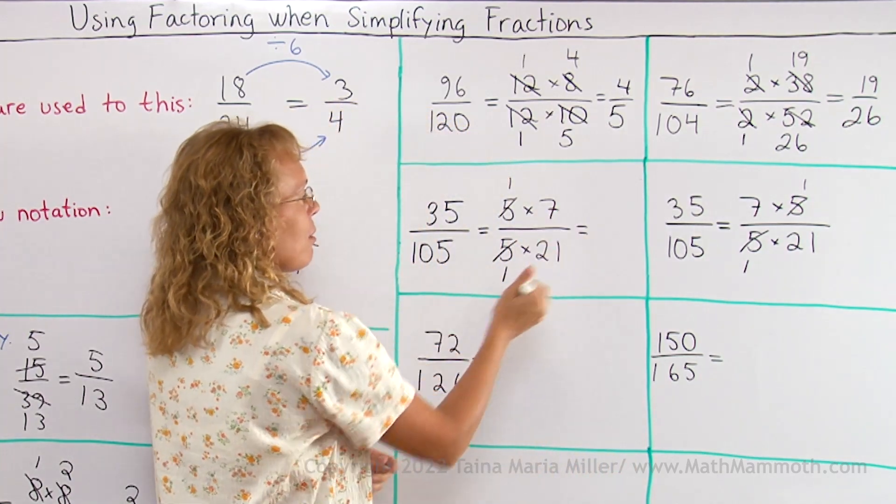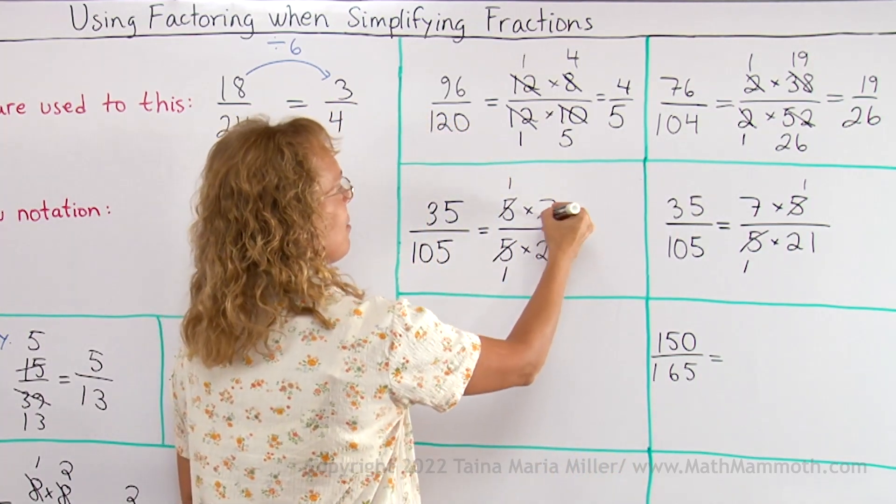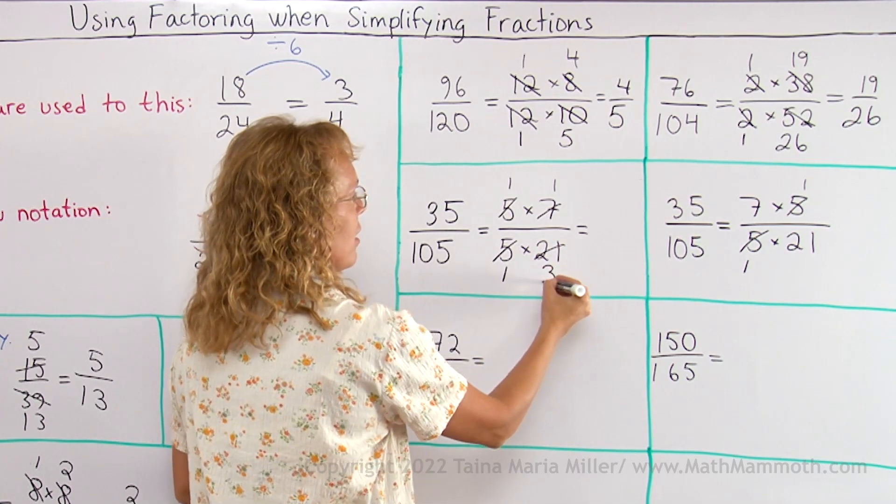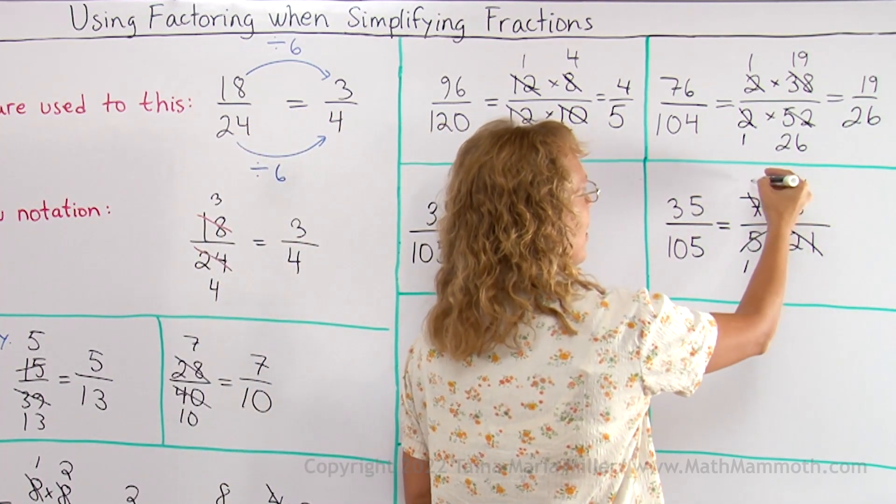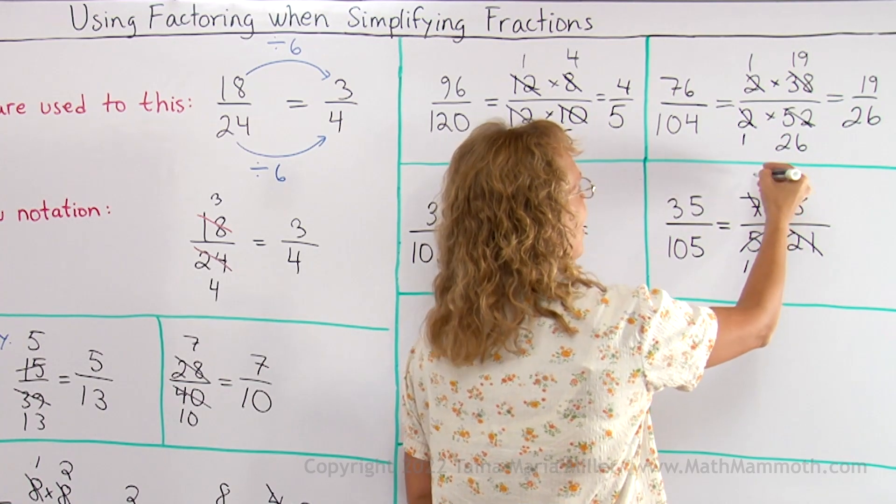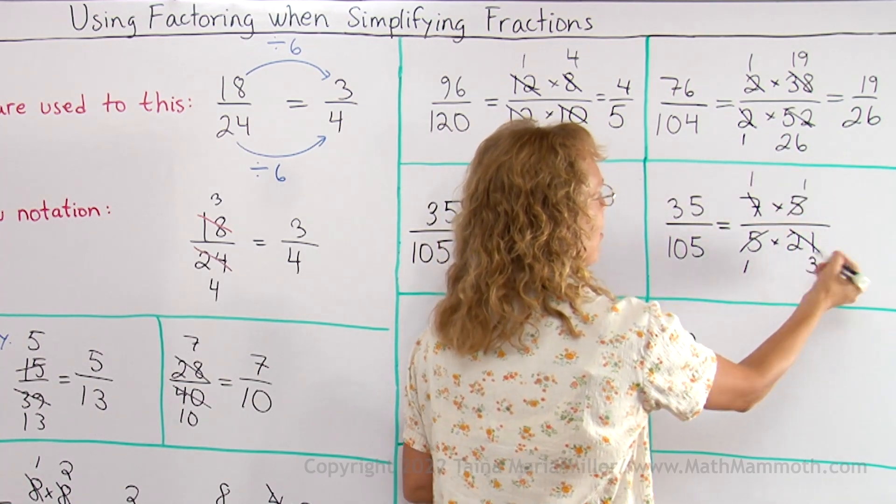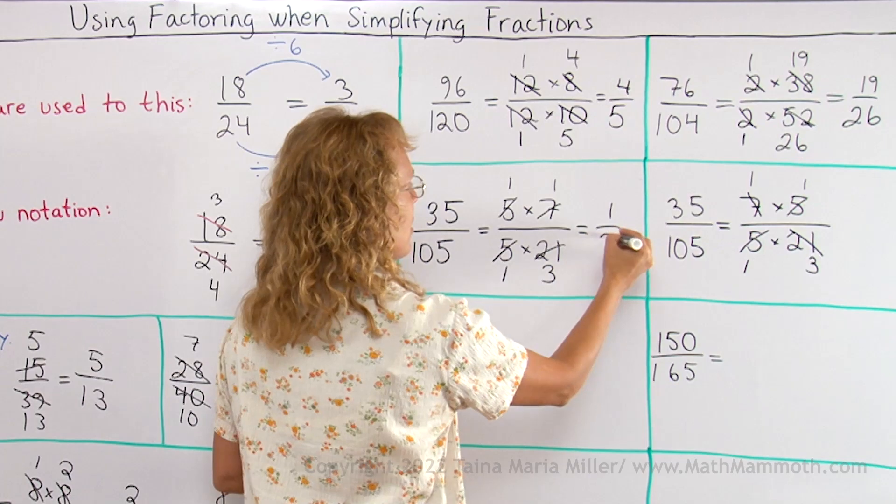And here 7 and 21, I divide by 7. And here the same happens too. I can take 7 and 21 from here and divide both by 7, so I get 1 and 3. Either way the answer is 1 third.